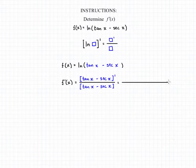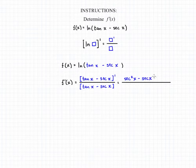If we take that derivative, our numerator is going to turn into secant squared x minus secant x tangent x, and our denominator is still going to be the tangent of x minus the secant of x.